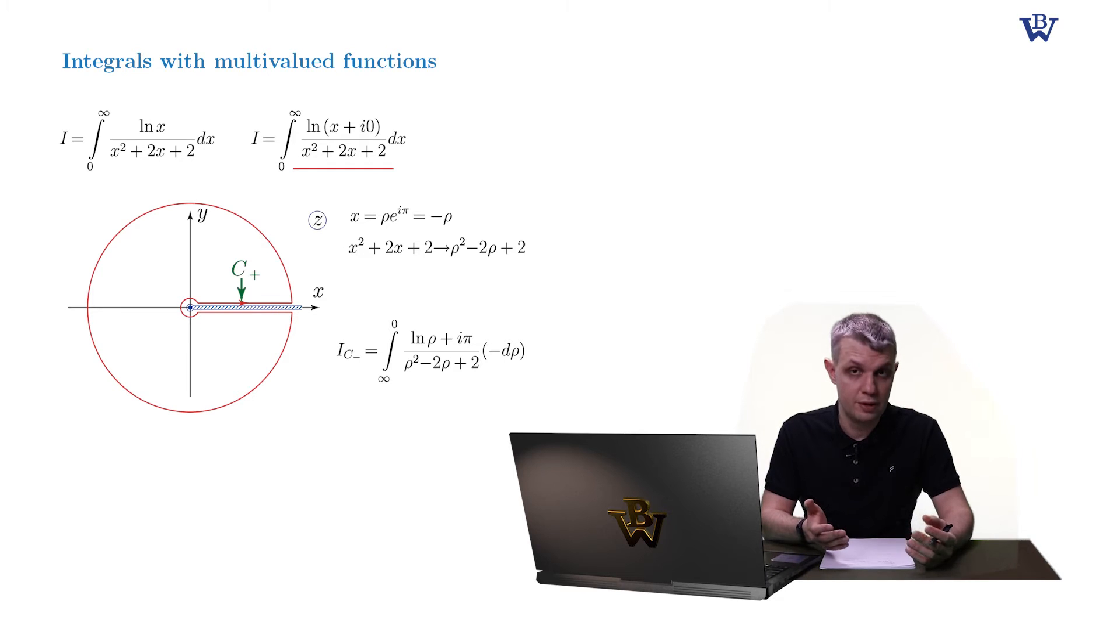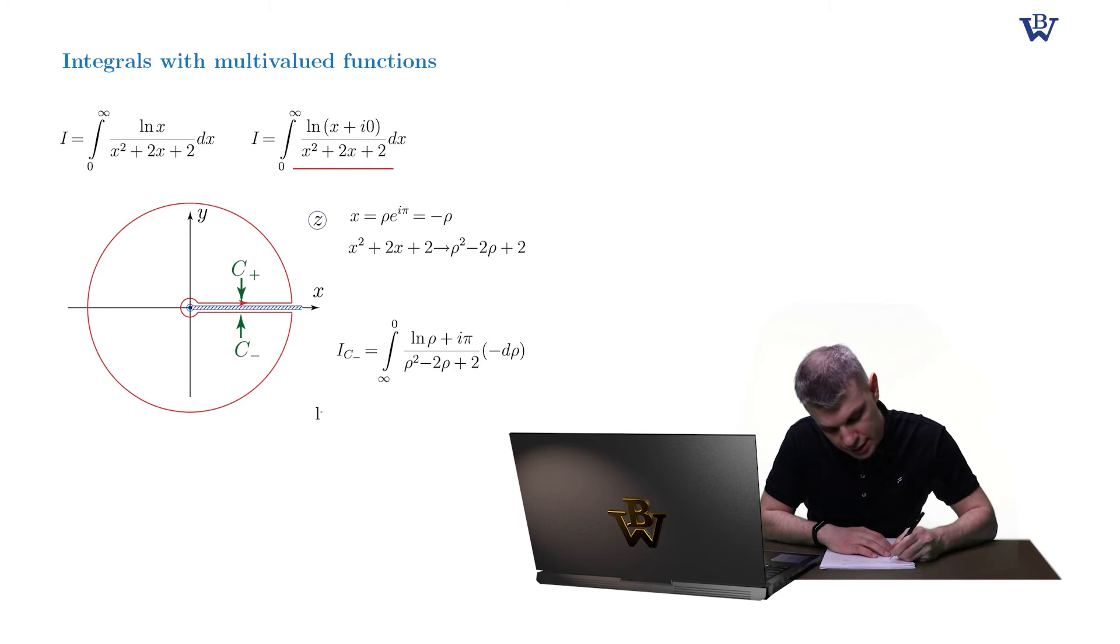As you hopefully remember, the log function on the lower bank of the branch cut looked as follows: ln of x minus i zero equals ln of x plus i zero plus two pi i. And as a result, the integral along the lower bank is equal to the one from plus infinity to zero, log of x plus i zero plus two pi i divided by the denominator dx.